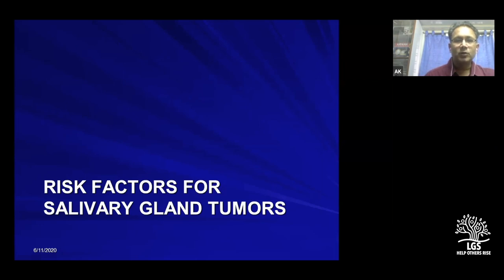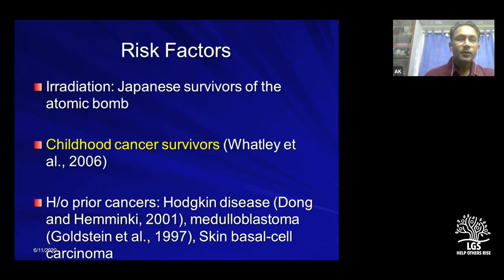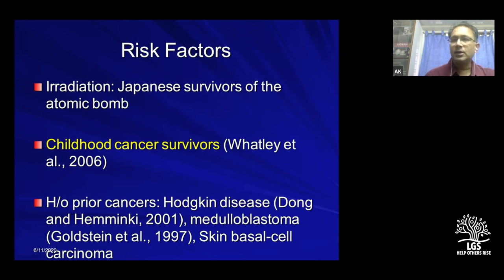Regarding risk factors, radiation is one of the most common — seen in Japanese survivors of the nuclear bomb, where there was an increase not just in thyroid cancers but also salivary gland tumors. In the St. Jude series, among childhood cancer survivors, there was an increased incidence as well. History of prior cancers is very important — patients with Hodgkin's, medulloblastomas, or any skin cancer with ultraviolet radiation exposure could have a predilection for salivary gland tumors.